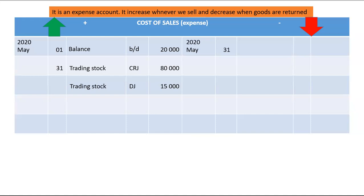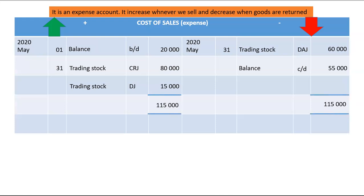What reduces Cost of Sales is when debtors return goods to us. In that case, we debit Trading Stock and credit Cost of Sales — here we credit Cost of Sales with Trading Stock from the Debtors Allowances Journal, amounting to 60,000. The debit side is larger than the credit side, so the balance carry down is on the credit side, which is 55,000. This represents the cost price of goods that have been sold.